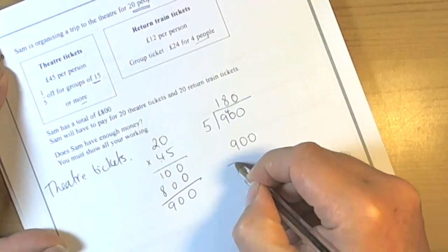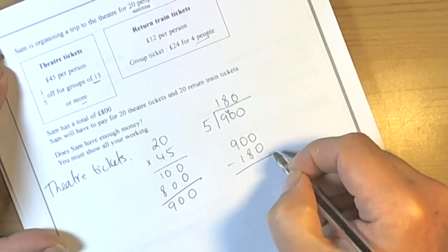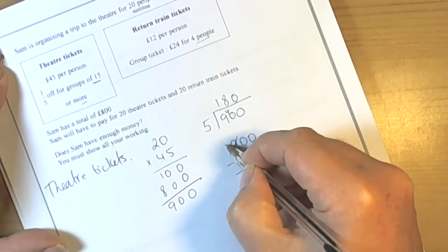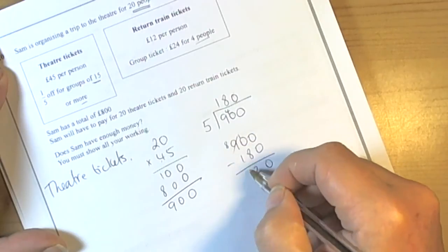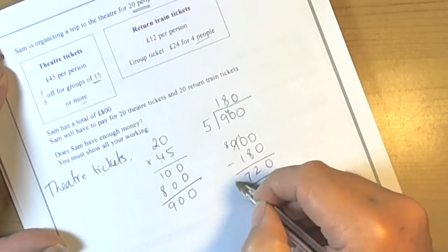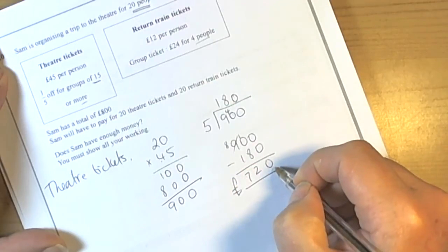So we do 900 take away 180, nothing, borrow 100 from there to make 10 tens, and 10 take away 8 is 2, and 8 take away 1 is 7. So so far it's going to cost us 720 pounds.